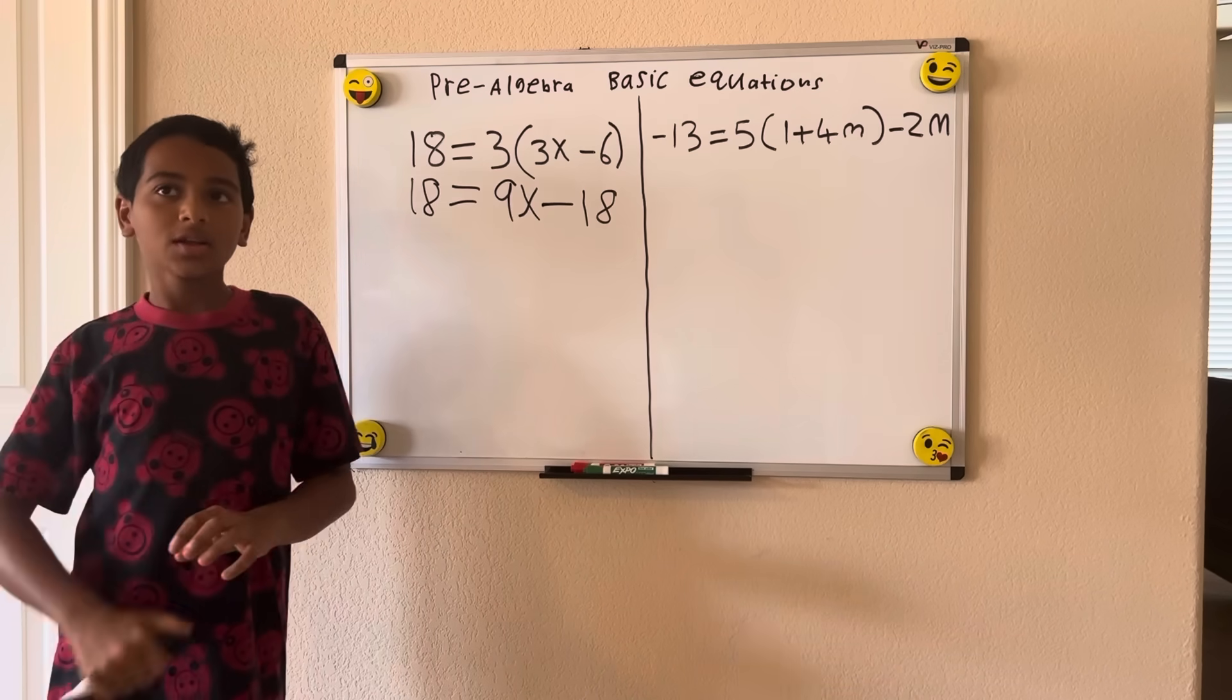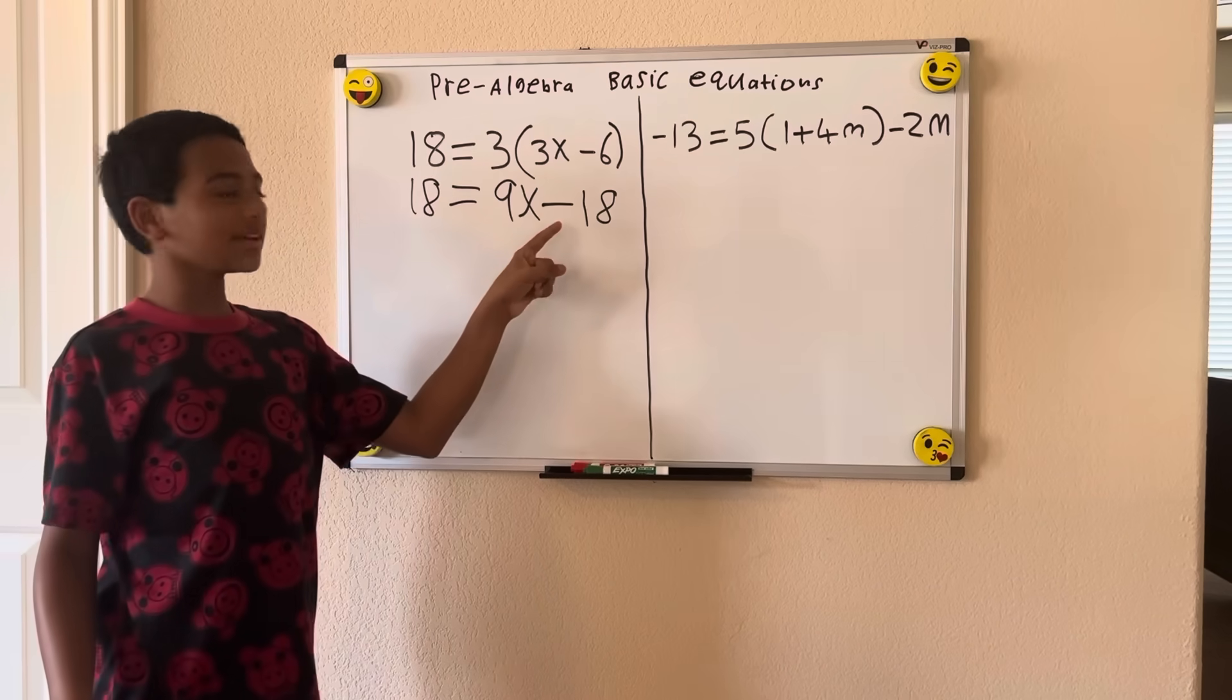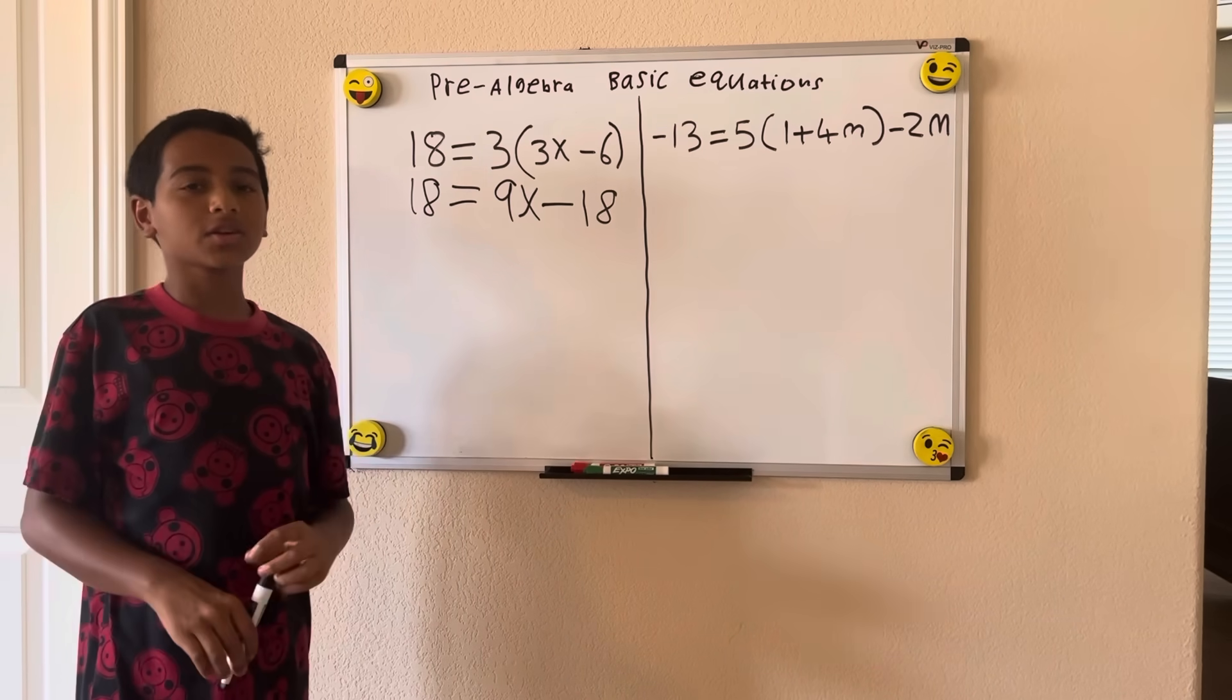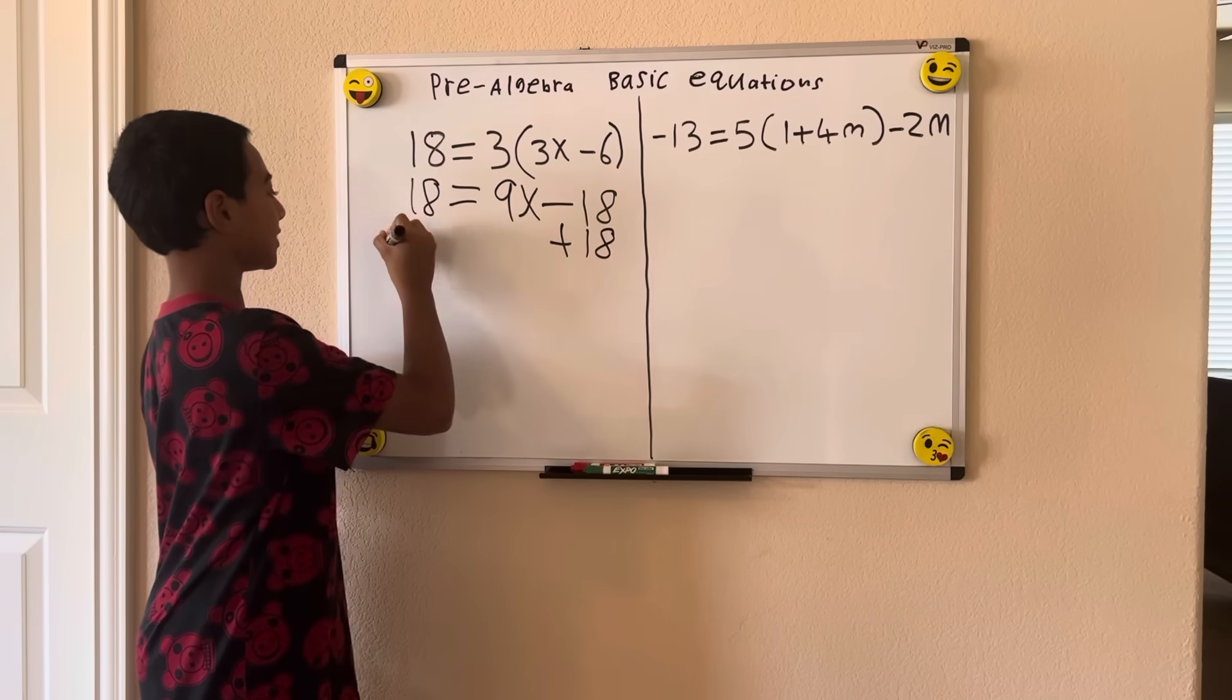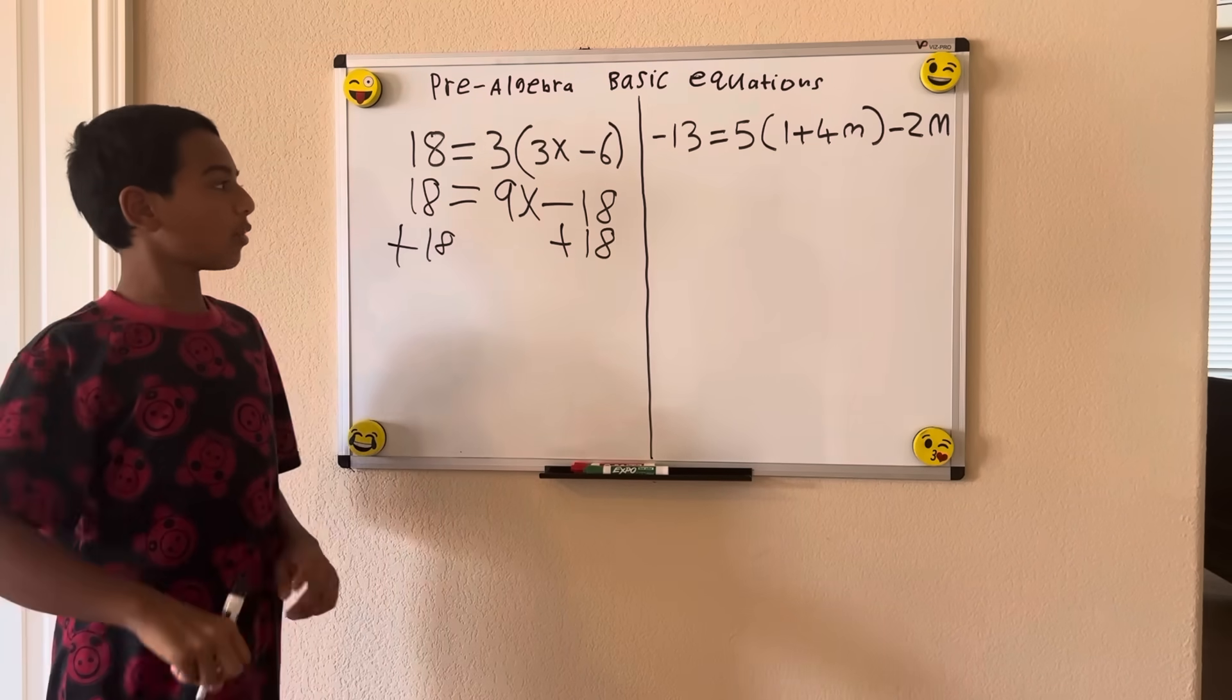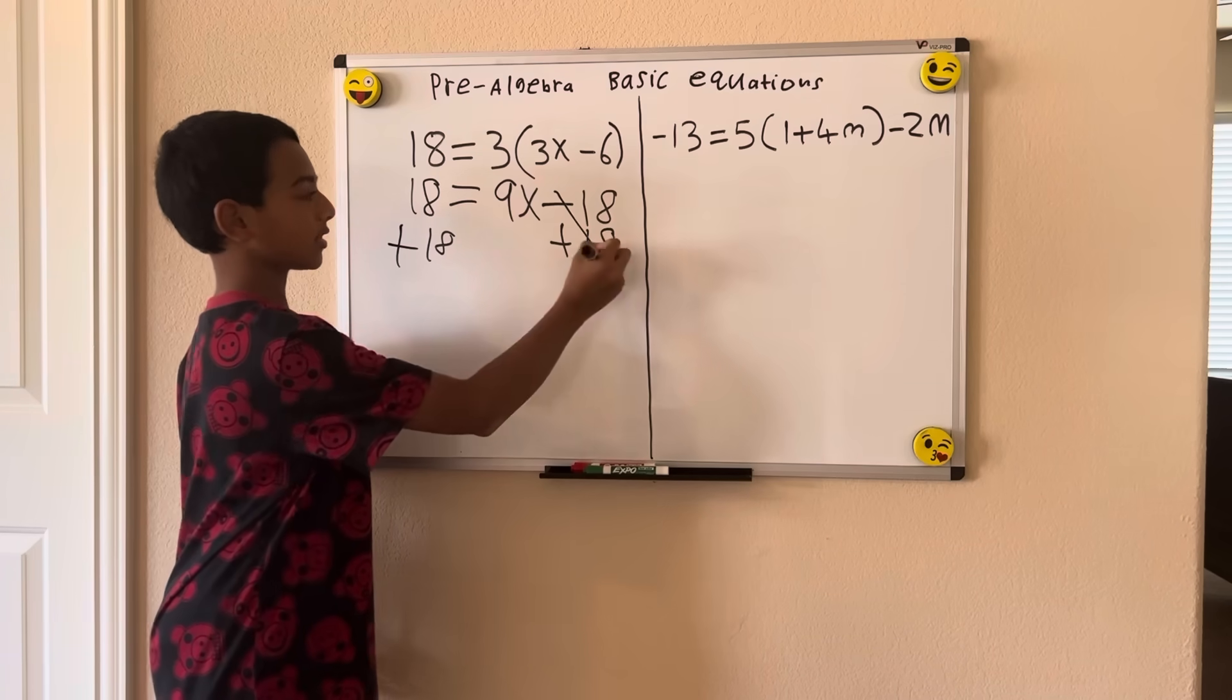Now, how would you solve to isolate x in this situation? So we have a minus 18 here. To get rid of this on the right side, we're going to add 18 to both sides of the equation. So adding 18 to there and adding 18 to there. What we notice is negative 18 plus 18 is 0, so it cancels out.